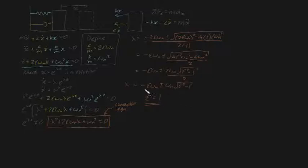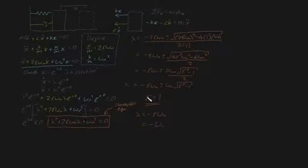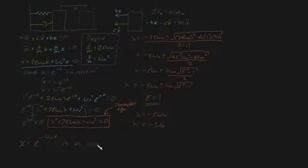The first thing to note is that our roots of lambda change. We're not dealing with roots plural anymore — when zeta is equal to 1, the square root term turns to 0, which means lambda, our root, is just going to evaluate to minus zeta omega n, which turns into minus omega n. So our root is just minus omega n, meaning x equals e to the minus omega n t is a solution to this equation.